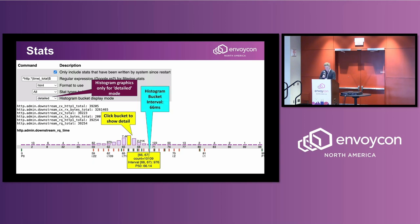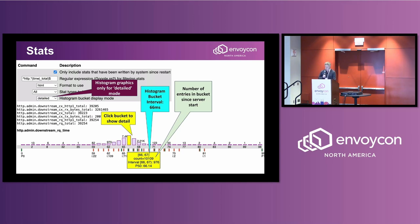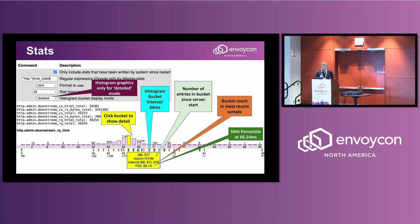For all of Envoy's life, it's actually kept a ton of detail in the histograms but not really exposed it to users. The detailed entry lets you see them. This shows you that this particular bucket highlighted in yellow is an interval that starts at 66 milliseconds and ends just before 67 milliseconds. It shows you that there are 10,000 counts since the server started, and that 976 of them have been counted since the last five-second polling interval. This happens to be the P50 mark — the 50th percentile.